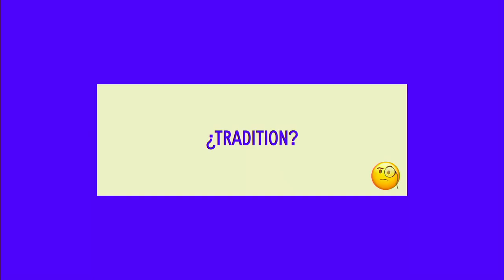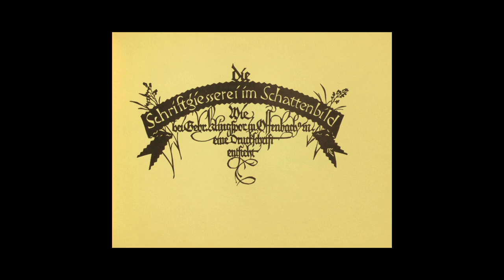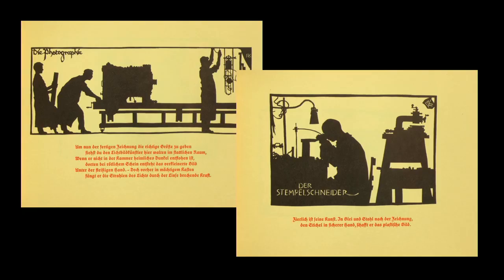But now let's talk about type education. Is there a tradition in type education? This is the cover of — I won't read the name in German — but it's the Type Foundry in Silhouette, a portfolio of 25 prints made by Rudolf Koch in 1928. Rudolf Koch was a German calligrapher and type designer. He designed Neuland, Kabel — you might be familiar with those. And these are two of the pages from inside that portfolio, showing the process for making type at the Klinschport Type Foundry in Germany. I love how he is able to take his aesthetic sensibilities from calligraphy and translate those into an illustration, carrying the same level of expressiveness.